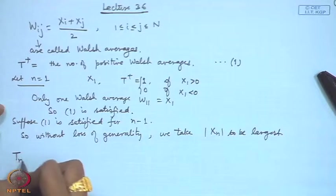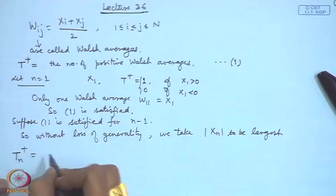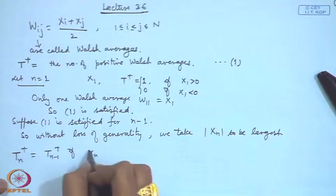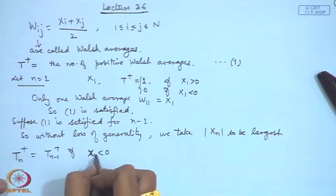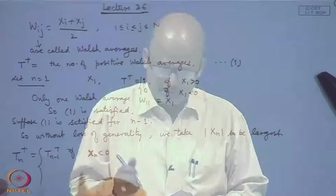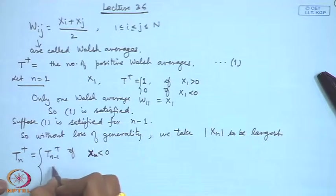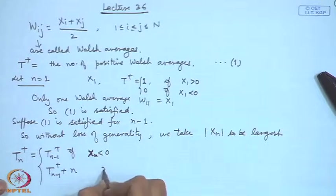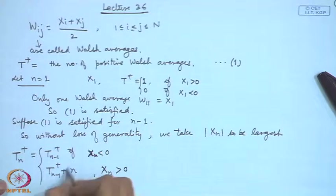Now consider T_n+. With subscript n to denote it is based on n observations: T_n+ = T_{n-1}+ if x_n is negative, because a negative observation does not contribute to T+. If x_n is positive and since it is the largest, its rank is n, so n is added to T_{n-1}+.